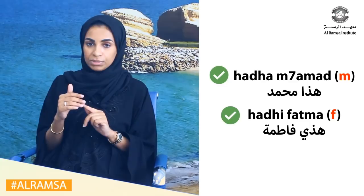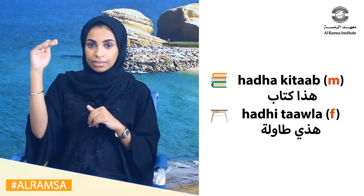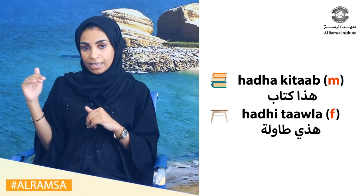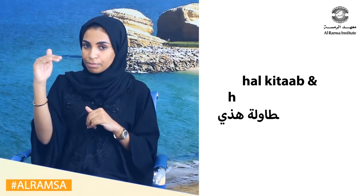Now let's look at another example with the same words but for things around us. In Arabic, objects also have masculine and feminine. For example, 'this is a book' is hatha kitab, because book is masculine. 'This is a table' is hathi taula, because table is feminine. But again, you can use hal as a shortcut for both: hal kitab or hal taula.